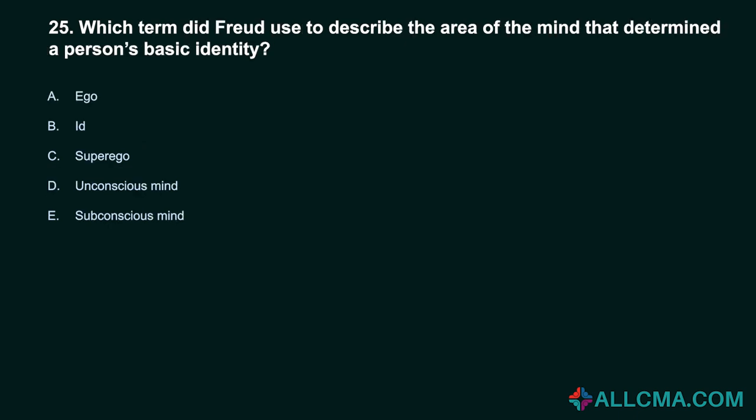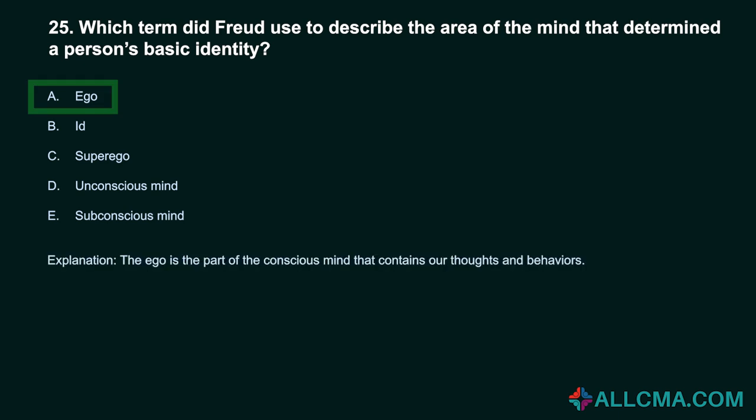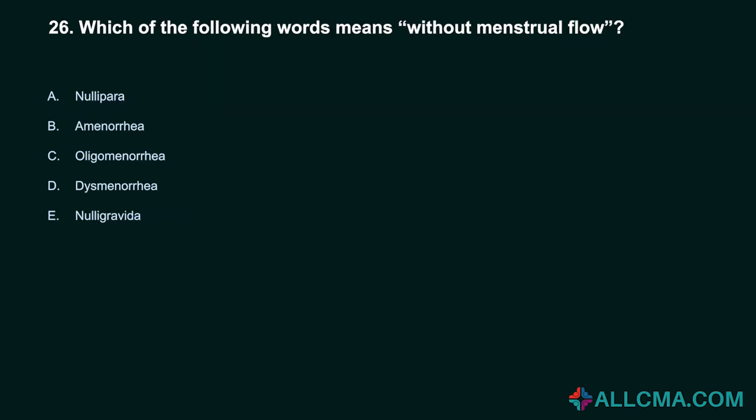Question 25: Which term did Freud use to describe the area of the mind that determined a person's basic identity? A. Ego. B. Id. C. Superego. D. Unconscious mind. E. Subconscious mind. Correct answer: A. Ego. The ego is the part of the conscious mind that contains our thoughts and behaviors.